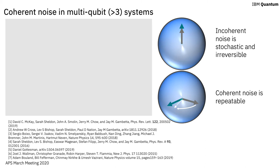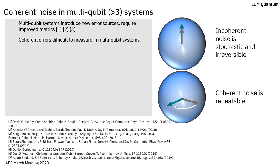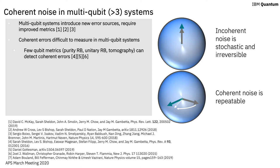So why are we interested in being able to measure coherent noise in a multi-qubit system? Multi-qubit systems introduce new error sources in the form of crosstalk. In addition, coherent noise can be amplified during a quantum algorithm, so the resulting infidelity can be much worse compared to incoherent noise. Presently, we can detect coherent errors in few-qubit systems using techniques based on randomized benchmarking and tomography, such as purity randomized benchmarking and unitary randomized benchmarking. However, these techniques are difficult to implement in systems greater than about three qubits because RB and tomography scale poorly as the number of qubits increases.